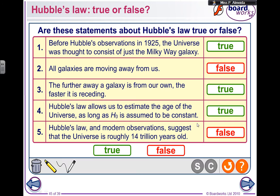The last sentence is false because it says Hubble's law and modern observations suggest that the universe is roughly 14 trillion years old. If it would say 14 billion years old, you could make it true, because in astrophysics, a couple of million is not going to make a difference. But it says 14 trillion, so that one is false.